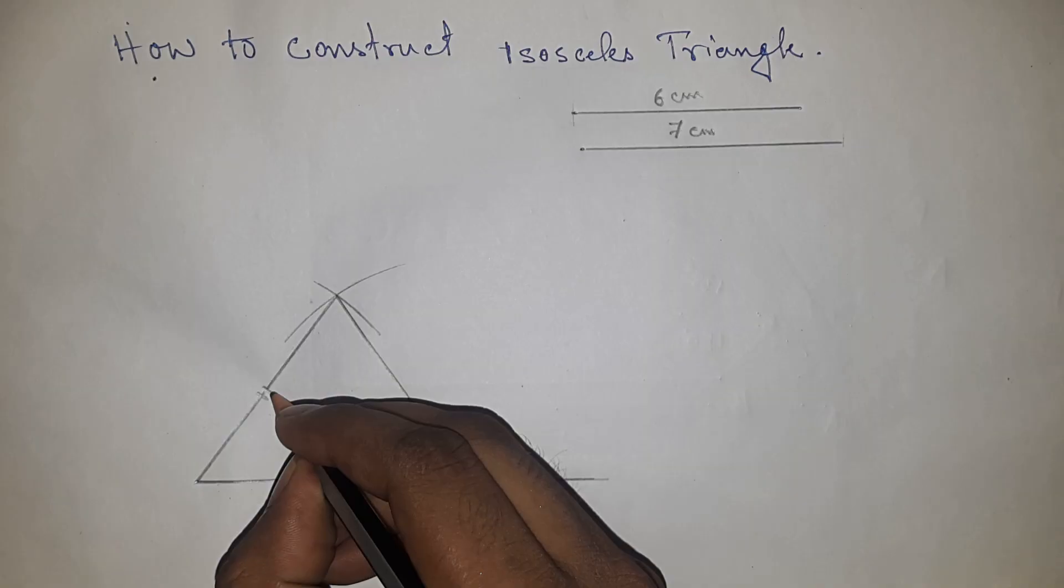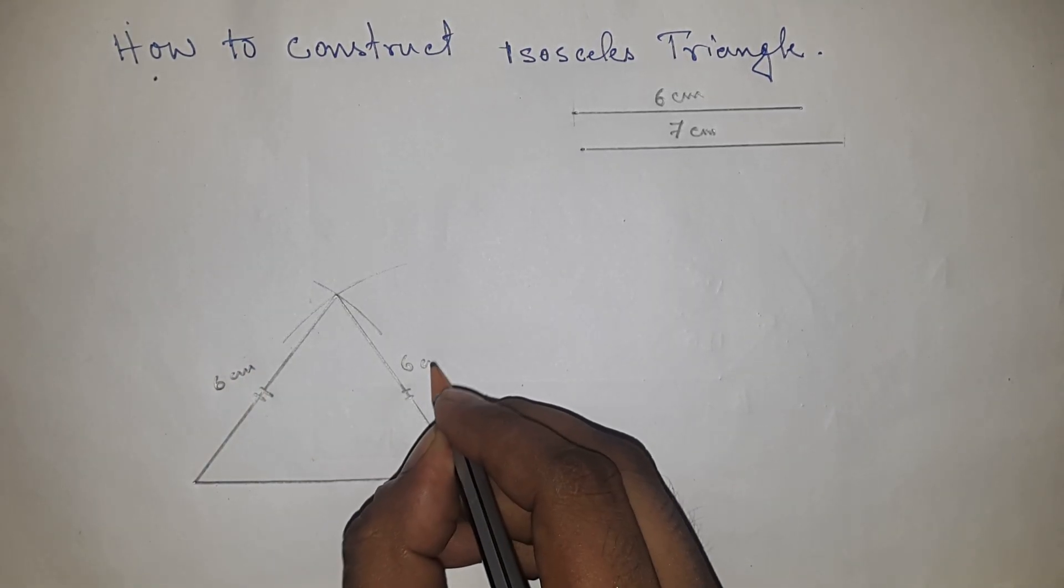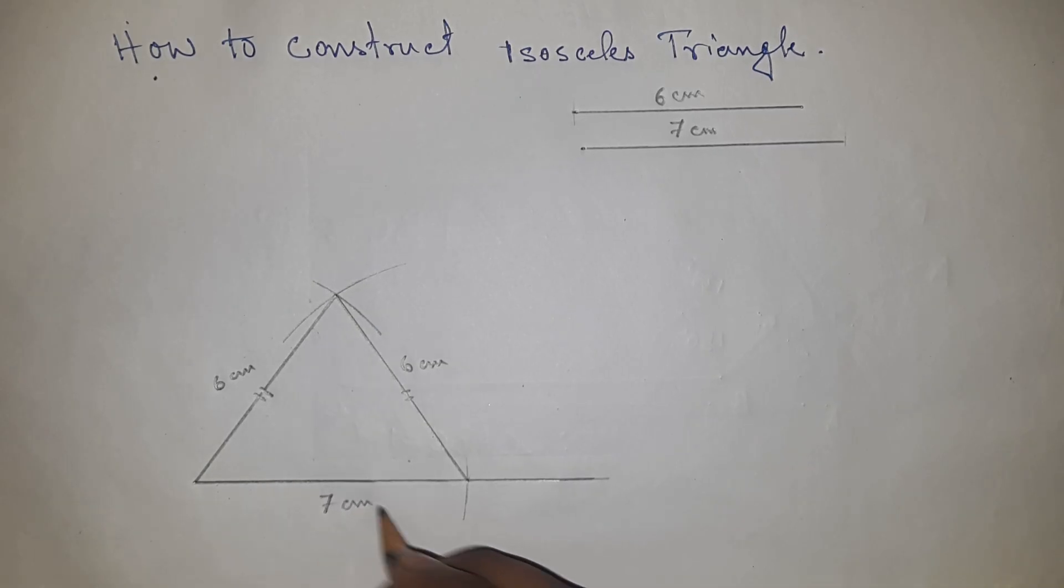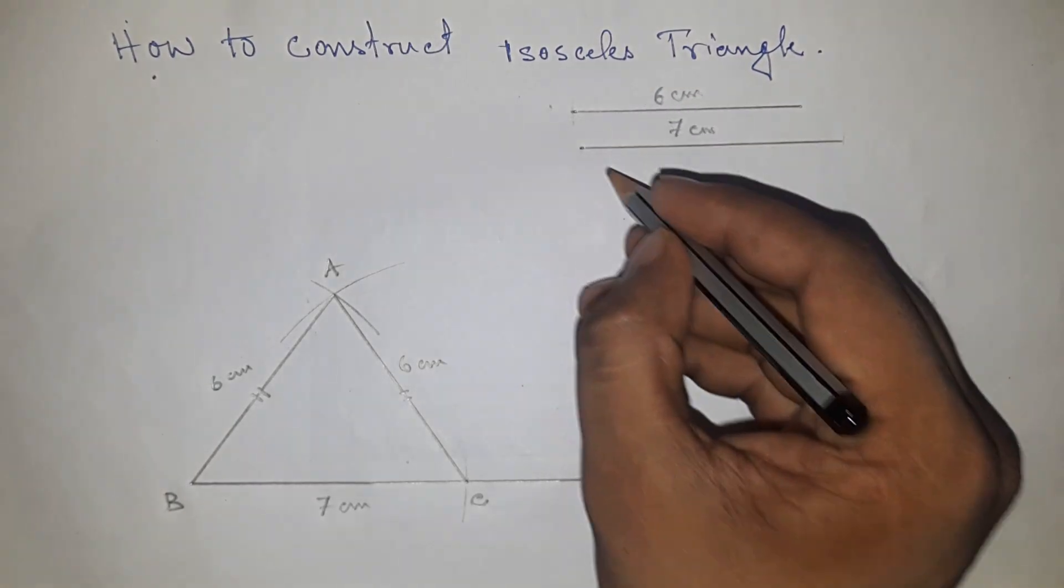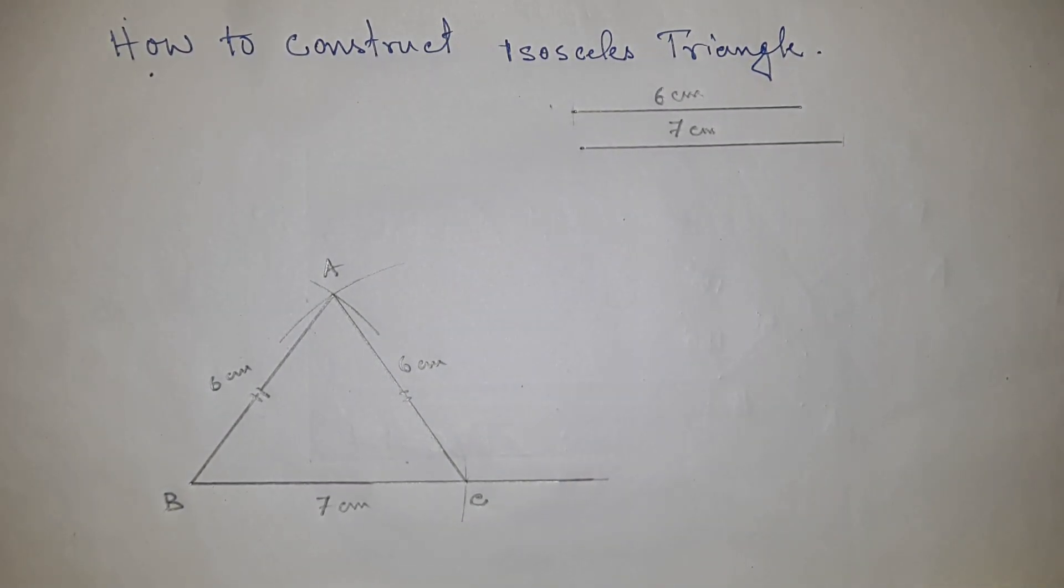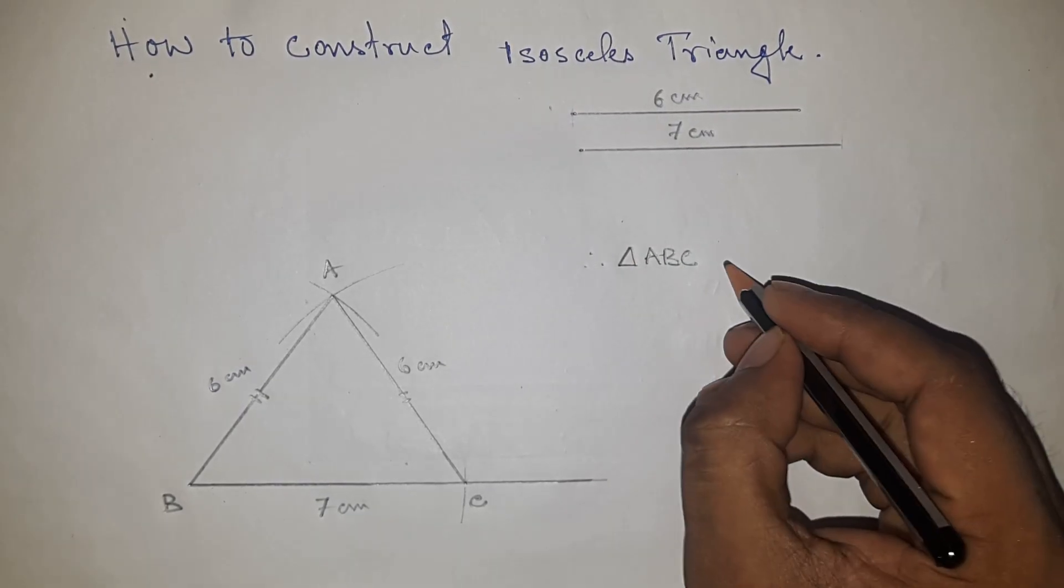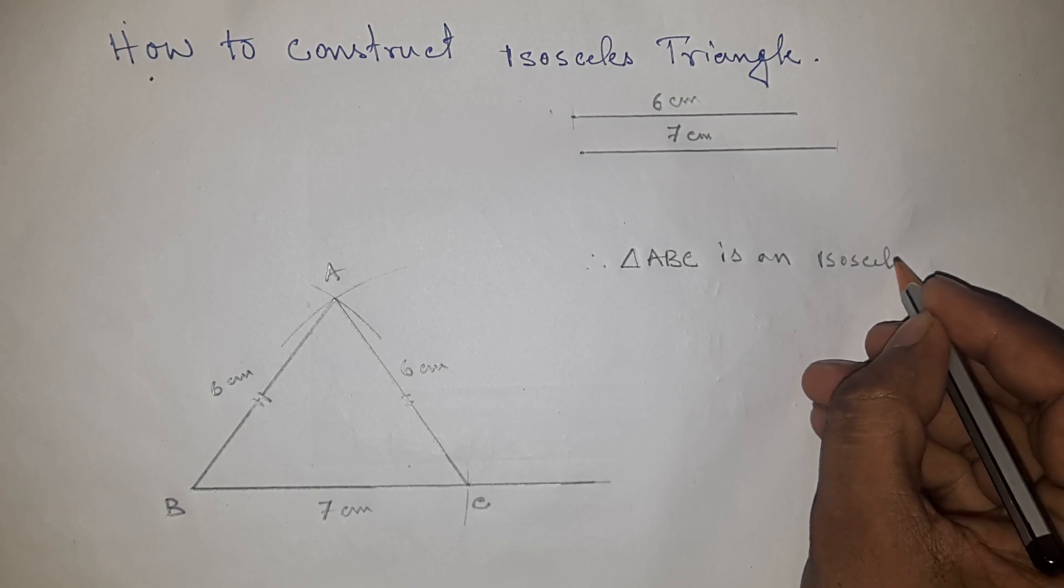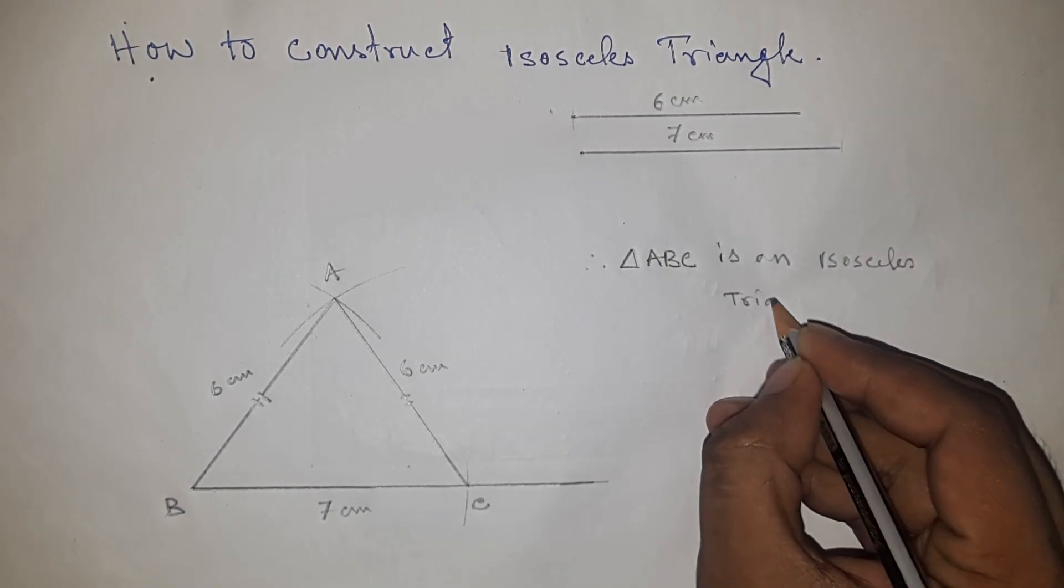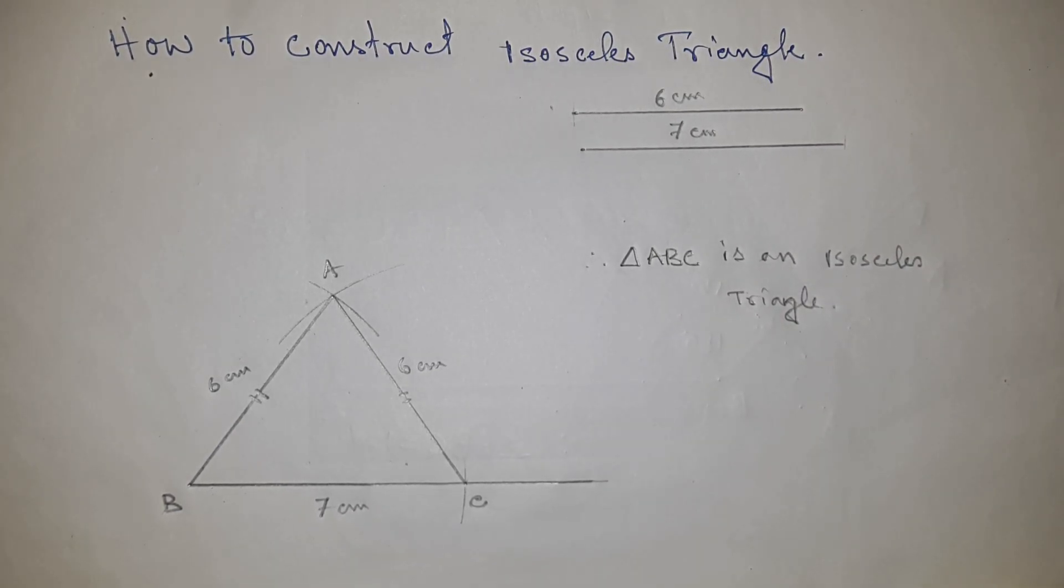Now this side and this side are equal, so this is 6 centimeters and this is 6 centimeters, and this one is 7 centimeters. Triangle ABC is an isosceles triangle. Please subscribe, like, and comment on my video. Thank you.